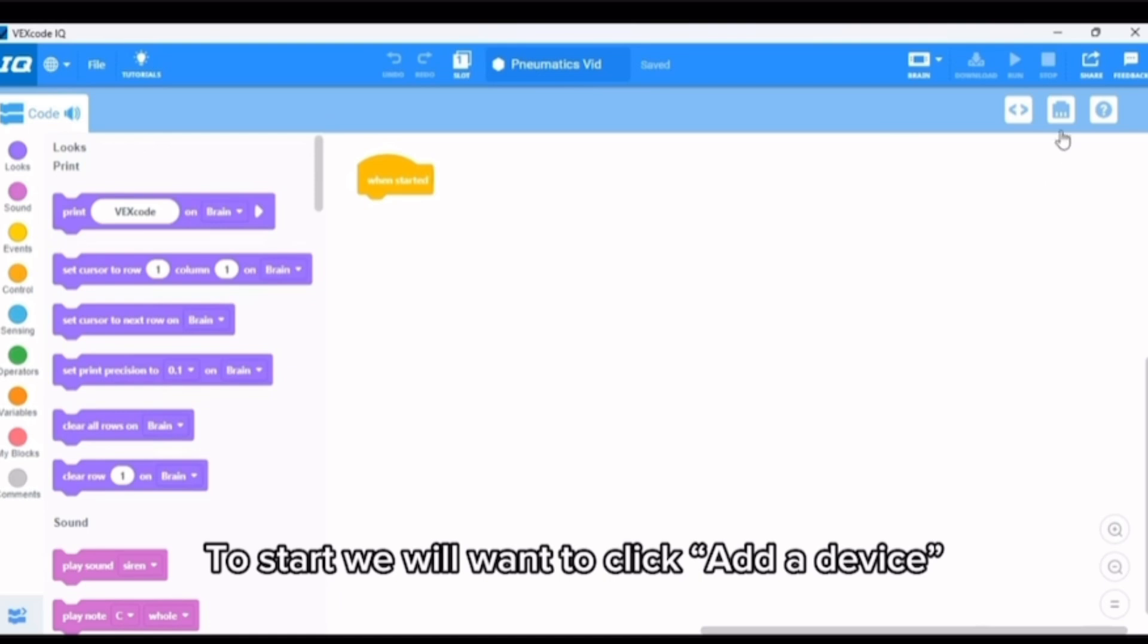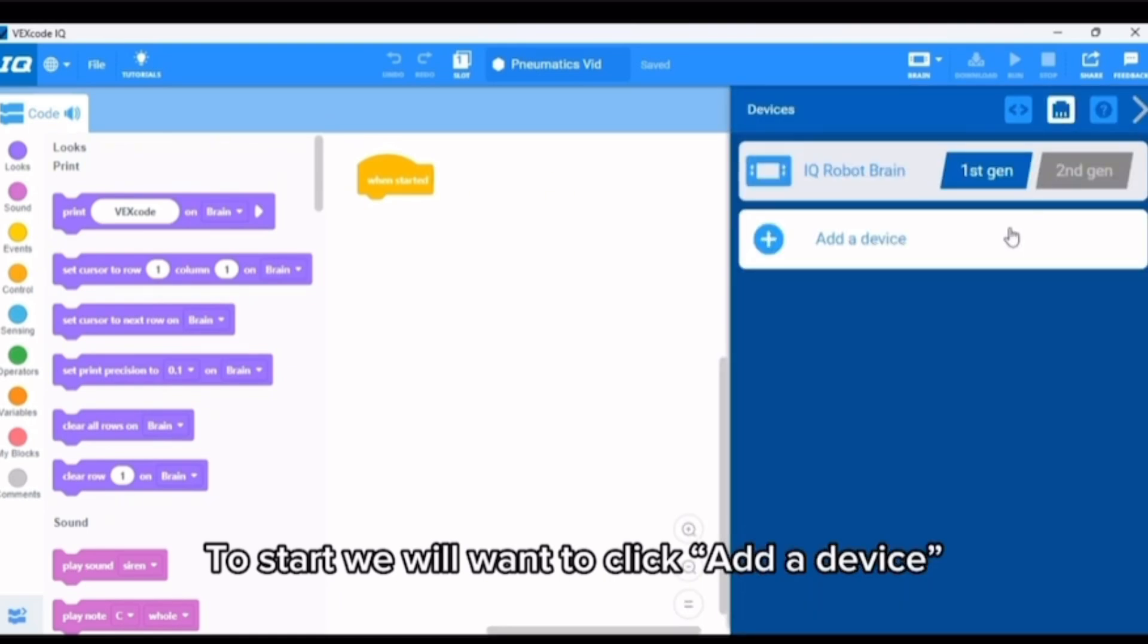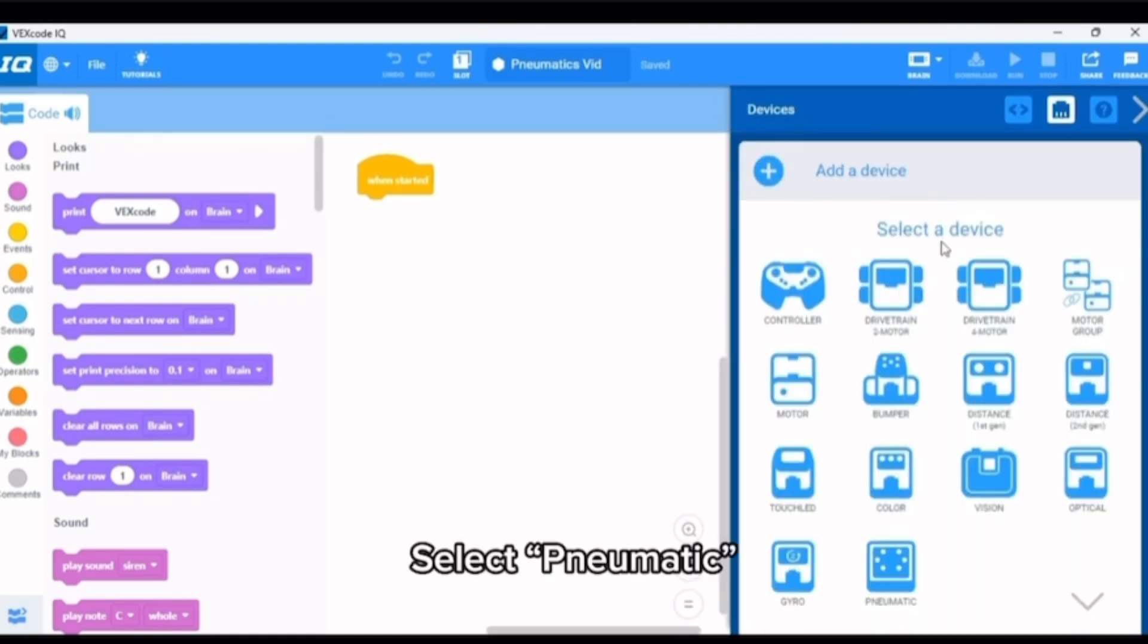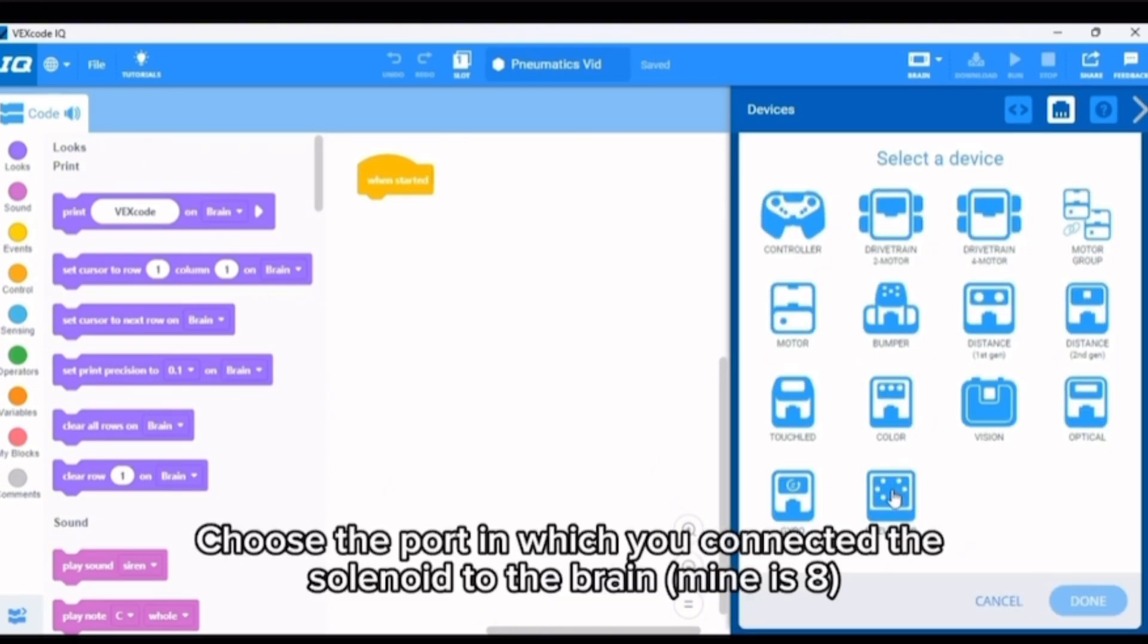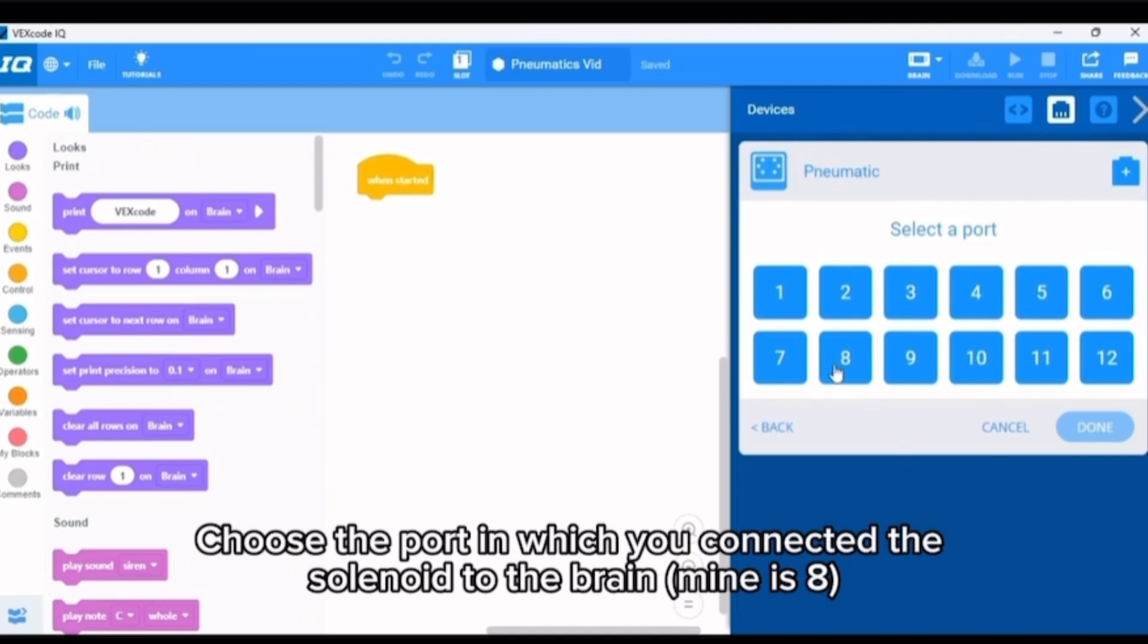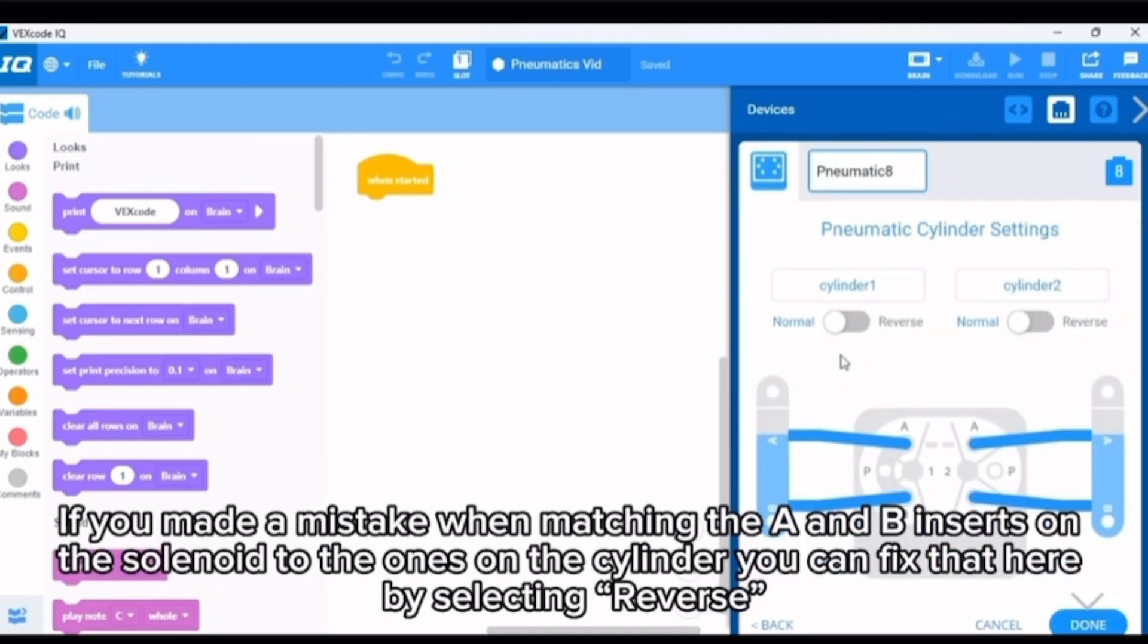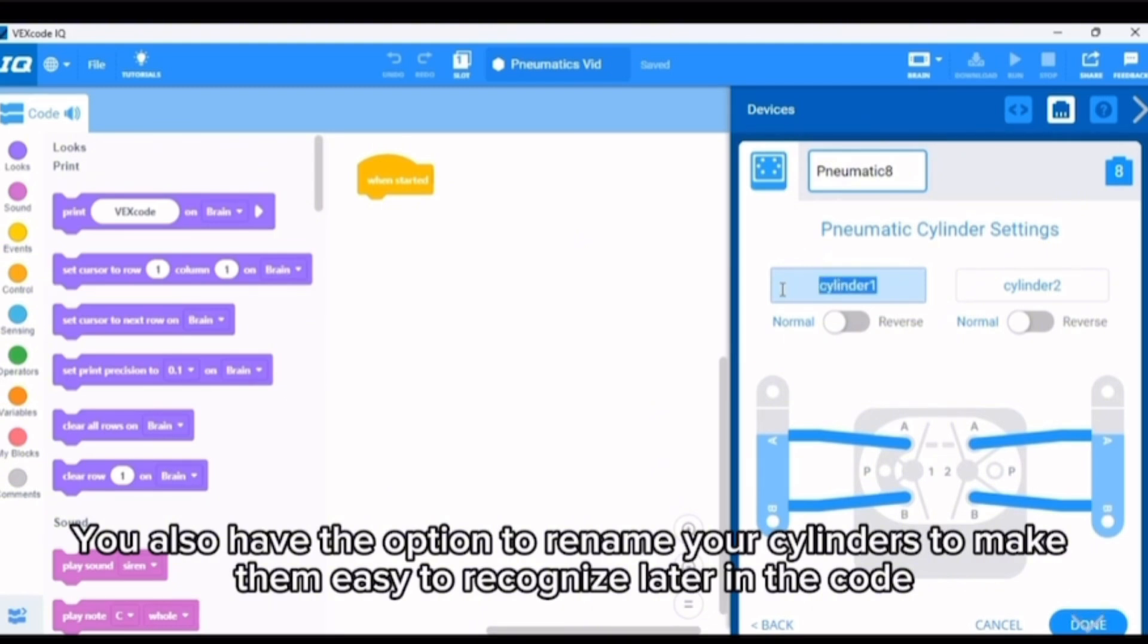To start we will want to click add a device. Select pneumatic. Choose the port in which you connected the solenoid to the brain. If you made a mistake when matching the A and B inserts on the solenoid to the ones on the cylinder, you can fix that here by selecting reverse. You also have the option to rename your cylinders to make them easy to recognize later in the code.